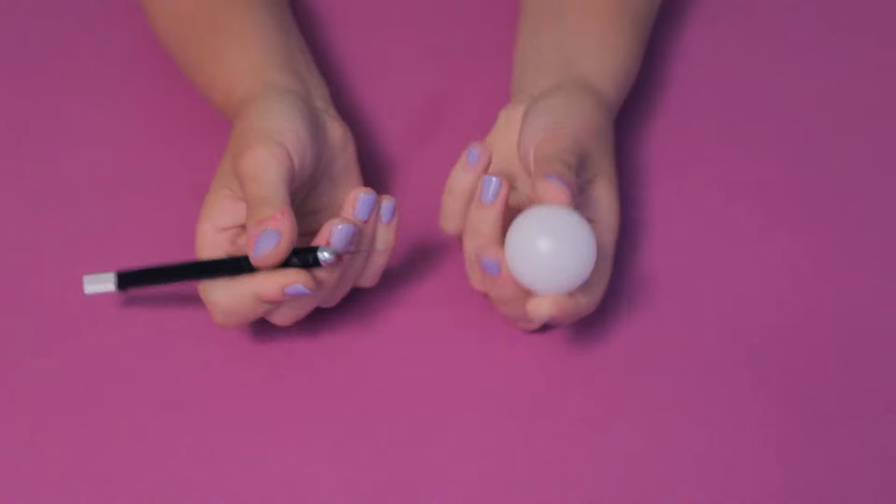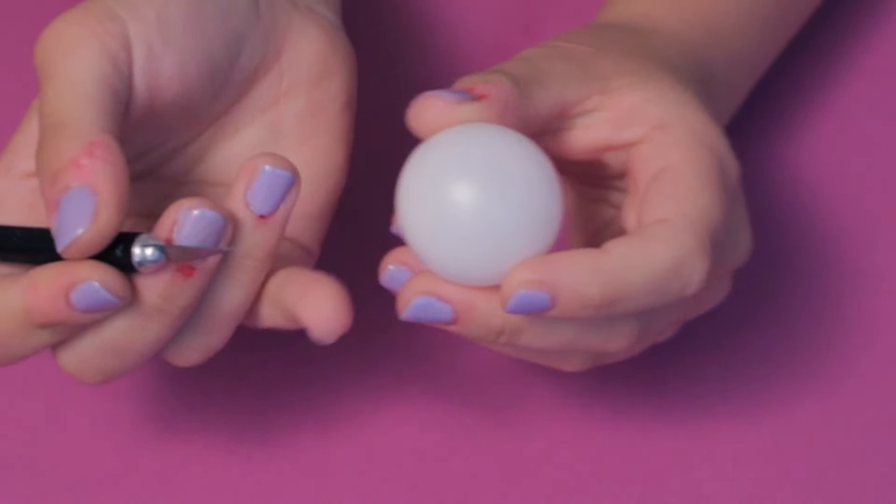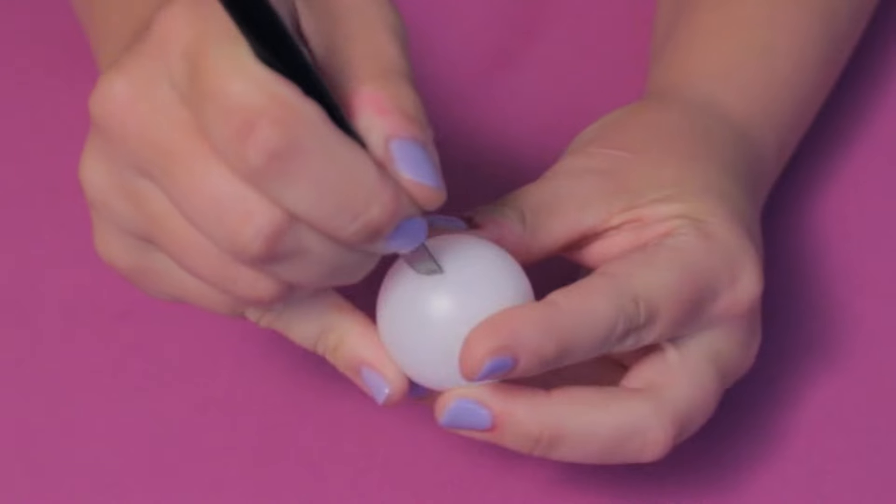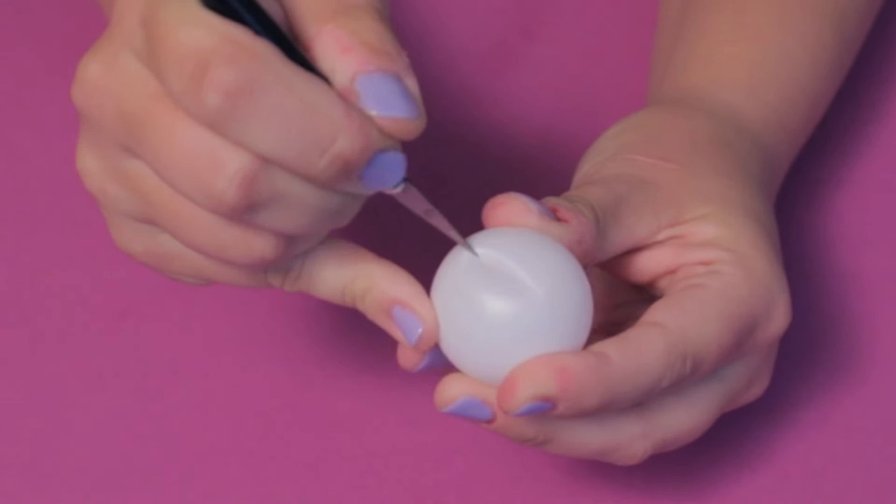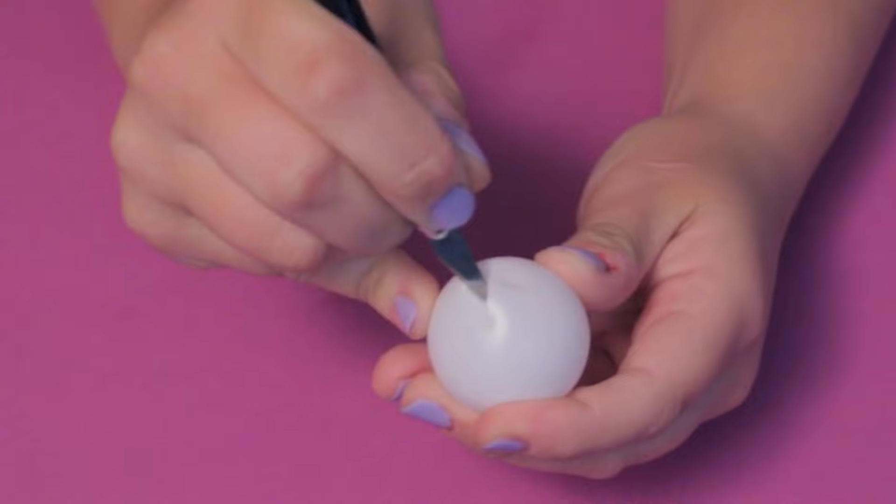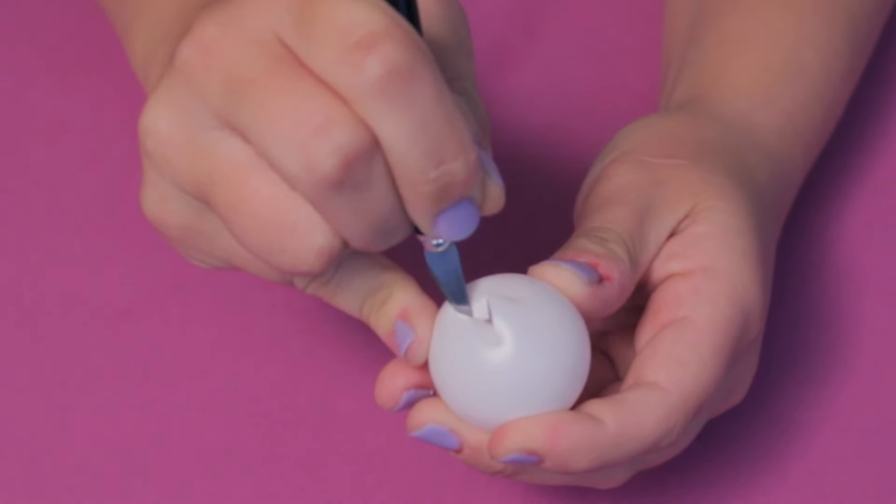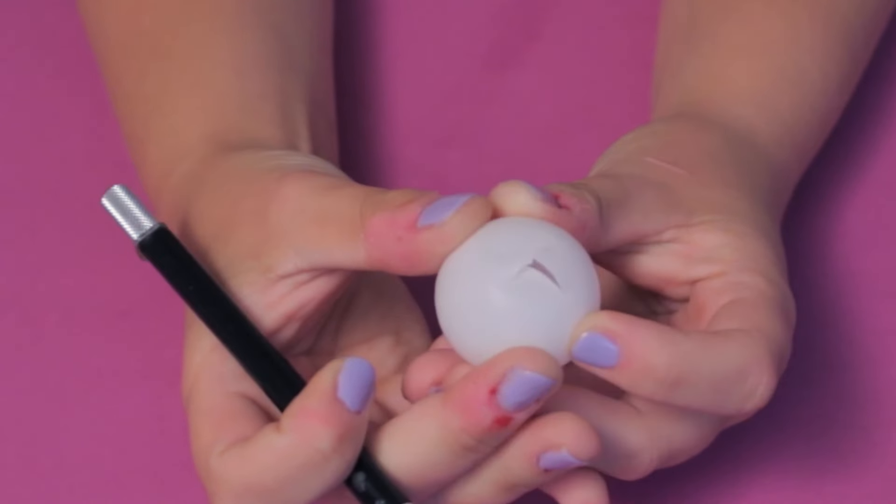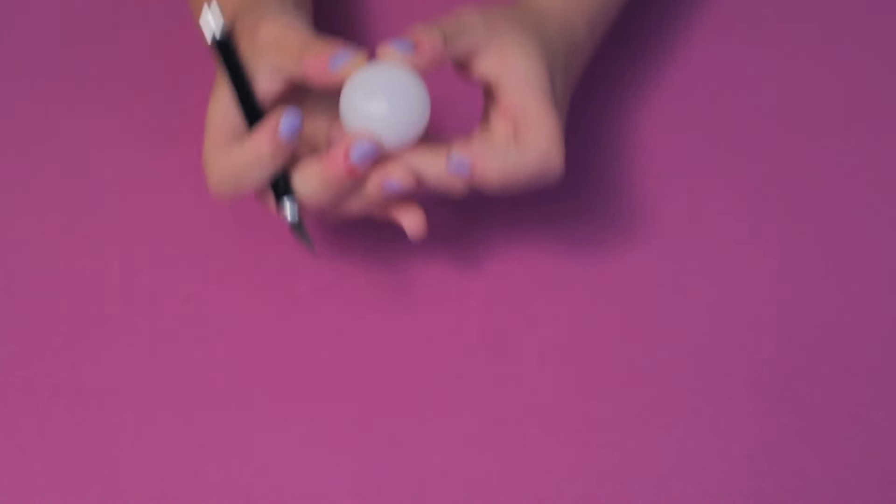You're going to grab your exacto knife and cut an X on top of each ping pong ball. For some reason I can't say ping pong ball right all the time. Anyway, when you're done with that X, you're going to do it to all of your ping pong balls.